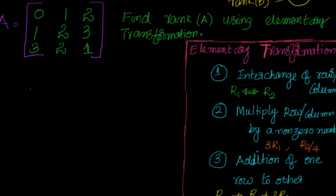Now let's look at elementary transformations. Sometimes when the matrix is given to you and the numbers are very large, expanding the determinant will take a lot of time and can be cumbersome. What we can do is apply transformations on the rows or columns to convert some elements into zeros, making it easier to calculate the determinant. Suppose I have a 3x3 matrix A and I want to find its rank.